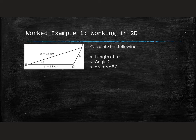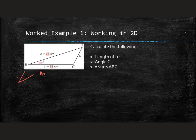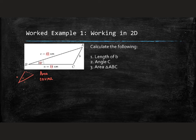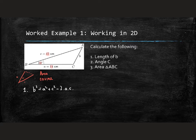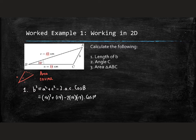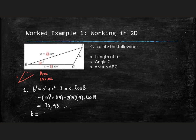We've been given a side, a side, and an included angle — that's a side-angle-side pattern — which means we can either find the area or use the cosine rule to find side B. Using the cosine rule: B squared equals A squared plus C squared minus 2AC times cosine of the included angle. That gives us 14 squared plus 17 squared minus 2 times 14 times 17 times cos 19, which equals 34.93. So B is approximately 5.9 centimeters.